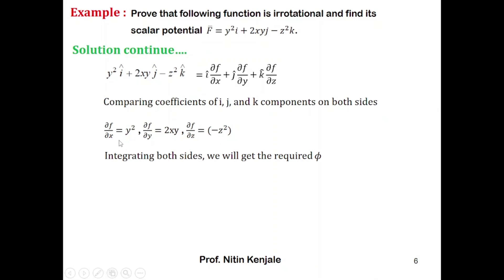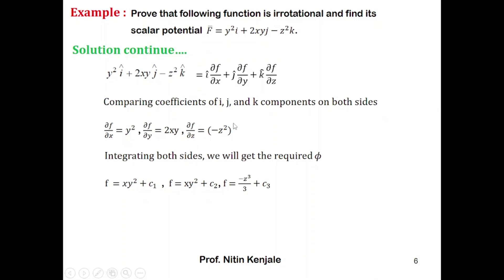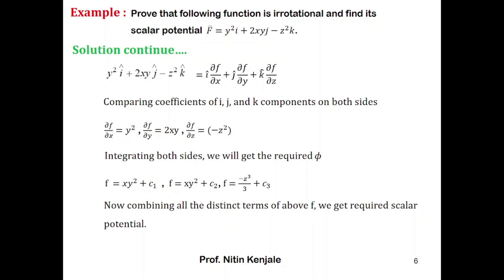Integrating the first equation with respect to x, we get phi = xy² + constant c1. Integrating the second equation with respect to y, we get phi = xy² + constant c2. Integrating the third equation with respect to z, we get phi = −z³/3 + constant c3. Finally, we combine all the distinct terms of phi.